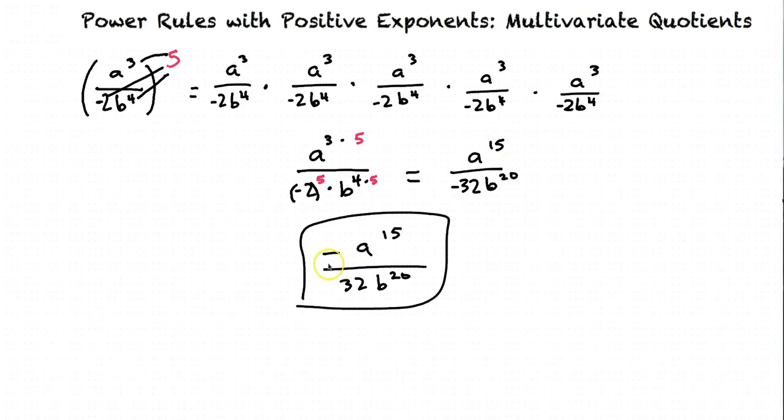So our final answer is a to the 15th, all over 32, b to the 20th power. And this is the same answer we would get if we had done this part up here by multiplying each term 5 times.